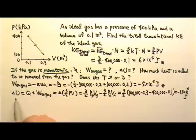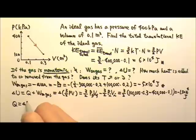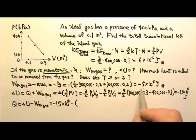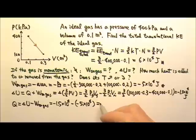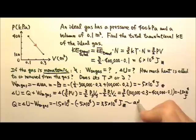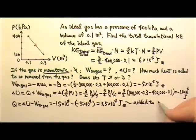Now we can use the first law to find Q, which is Q = ΔU − W (work done on the gas). ΔU is −1.5×10⁴ and the work done on the gas is −5×10⁴, so Q equals 3.5×10⁴ joules. Because Q is positive, this is heat added to the gas. If Q were negative, that would mean heat is removed from the gas.